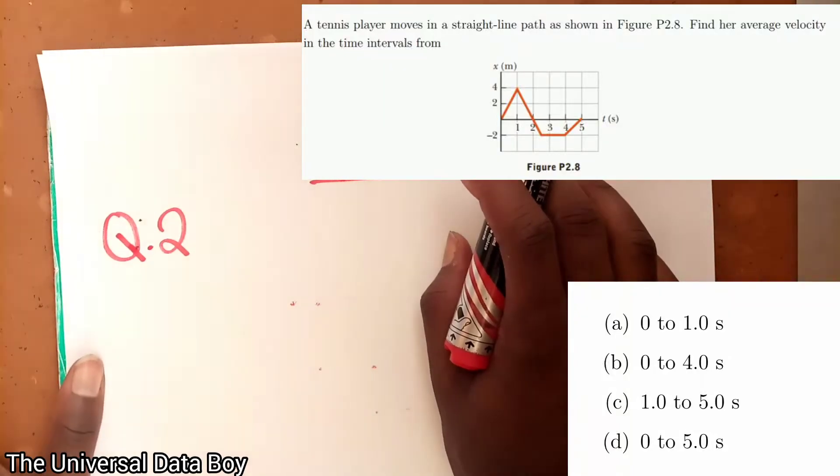So we are still on worksheet 3, we go to question 2. It says the tennis player moves in a straight line path as shown in figure P2.8. Find her average velocity in the time intervals from